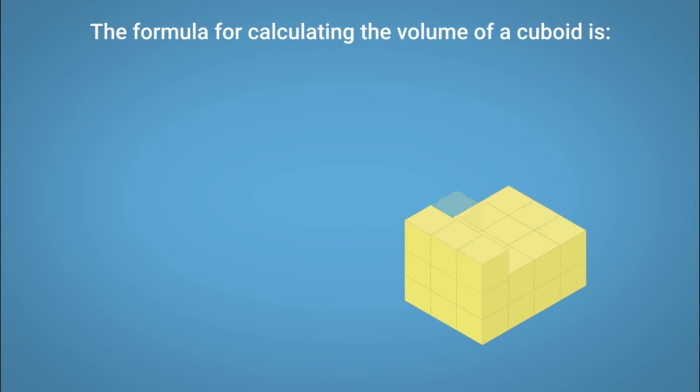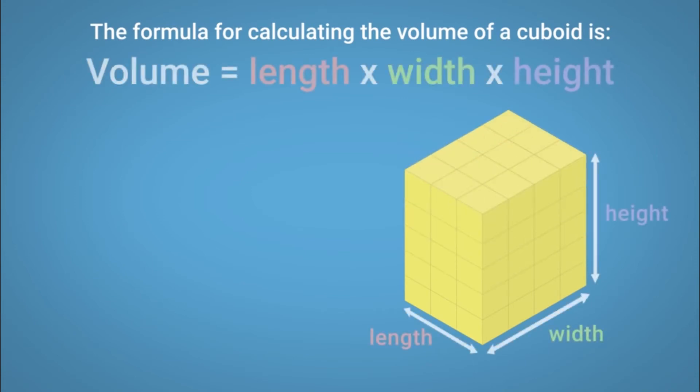The formula for calculating the volume of a cuboid is: Volume equals length multiplied by width multiplied by height.